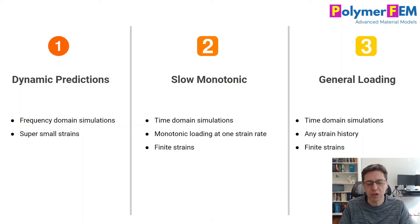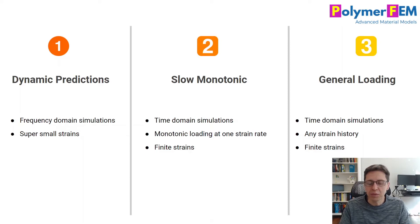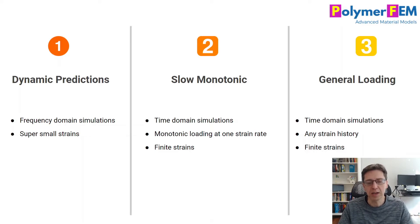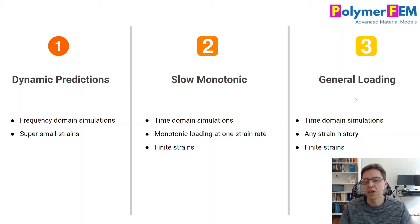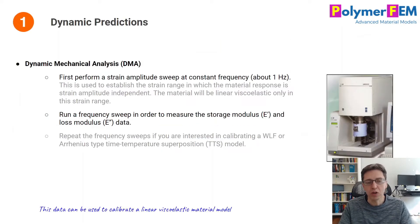The three cases are: dynamic predictions — where you're mainly interested in the frequency response of the adhesive; slow monotonic loading up to failure, where you can make some simplifications to the test plan and arrive at a continuum level material model very quickly; or the general loading situation — time domain analysis, mainly large strains if achievable, but also to failure. Let's talk about these in order.